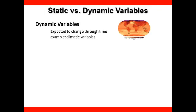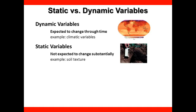Appreciable changes in climate are forecasted to occur over the duration of the present century, making climatic predictor variables in distribution models what we call dynamic variables. Whereas the processes defining soil characteristics change over geologic time scales, it's reasonable to consider predictor variables related to soil to be static or unchanging over the next 50 to 100 years in distribution models.